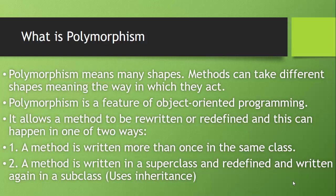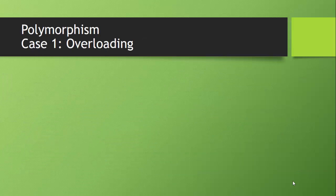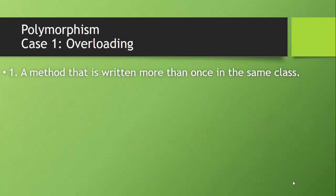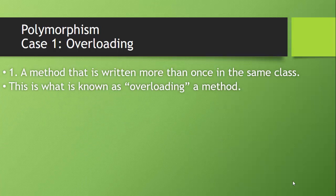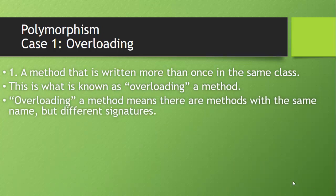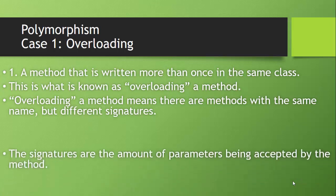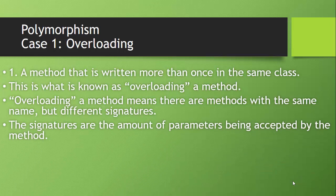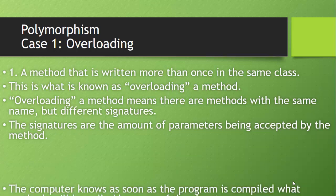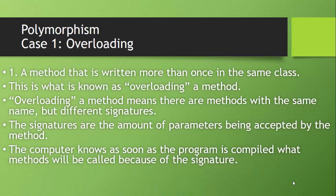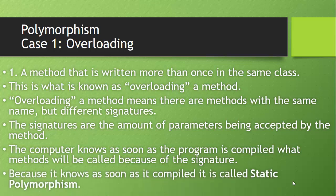Let's talk about the difference and tie both to static and dynamic polymorphism. Case one: a method that is written more than once in the same class. This is what is known as overloading a method. Overloading means there are methods with the same name but different signatures — the signatures being the amount of parameters accepted by the method. The computer knows as soon as the program is compiled what methods will be called because of the signature. Because it knows at compile time, it is called static polymorphism.